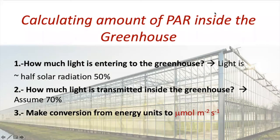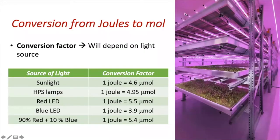We finally have light inside the greenhouse in watts per square meter or joules. Now let's make the conversion from energy units to PPFD. In order to make this conversion, we need to know our source of light. When working in a greenhouse, we choose sunlight, so the conversion factor is 4.6 — one joule is equal to 4.6 micromoles. To get PPFD, multiply energy units in joules or watts per square meter by 4.6. Note that joules are equal to watts per square meter in this context.